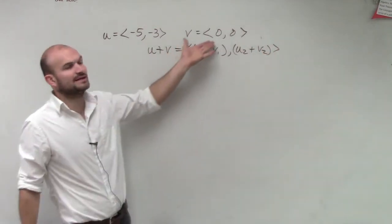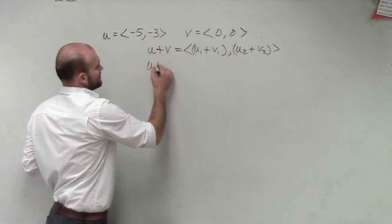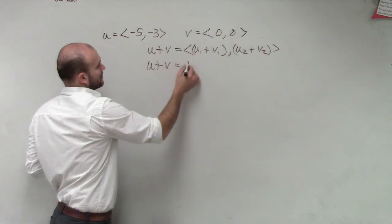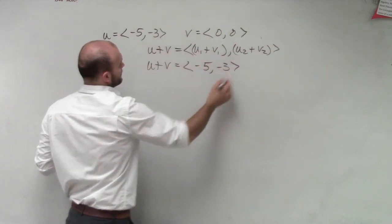Now this one's pretty basic, because v is pretty nice, because v is just zero. So we know that u plus v is just going to equal negative 5, comma, negative 3.